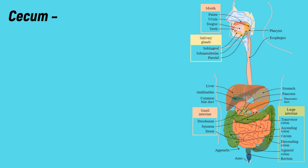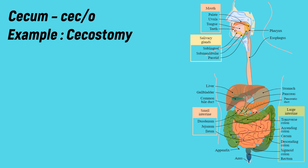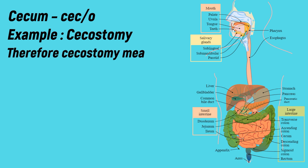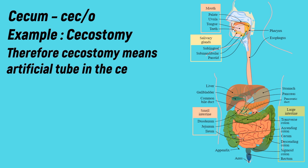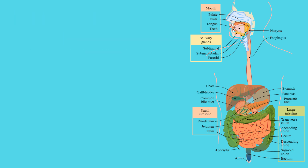Cecum: the medical term for cecum is 'ceco'. Example: cecostomy. -Ostomy means artificial tube. Therefore, cecostomy means an artificial tube in the cecum.